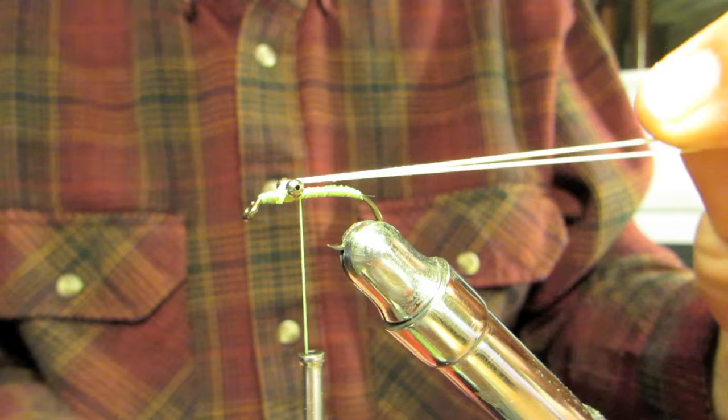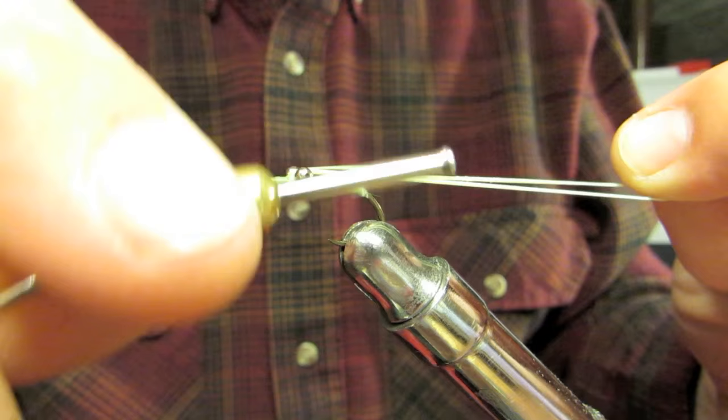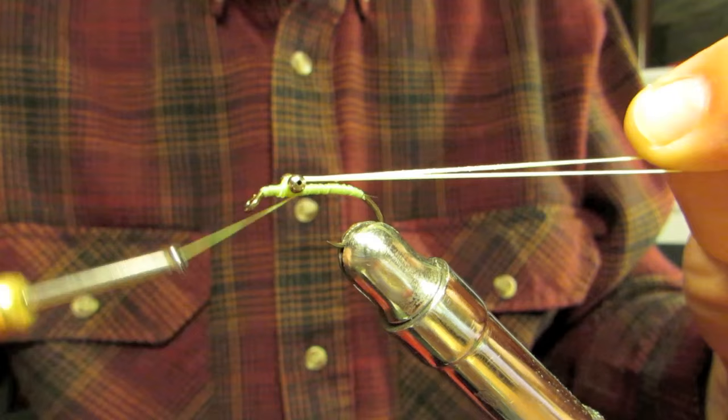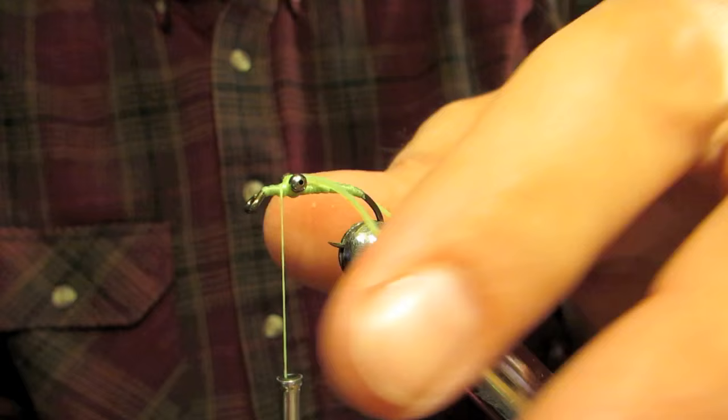Pull it back between the eyeballs, and then come up and continue the figure eight pattern. Going forward and back. Returning the thread to the front of the fly.